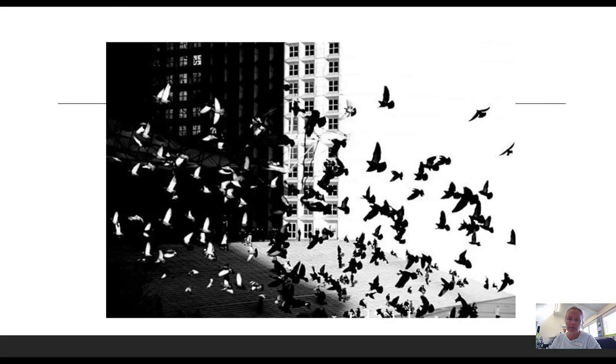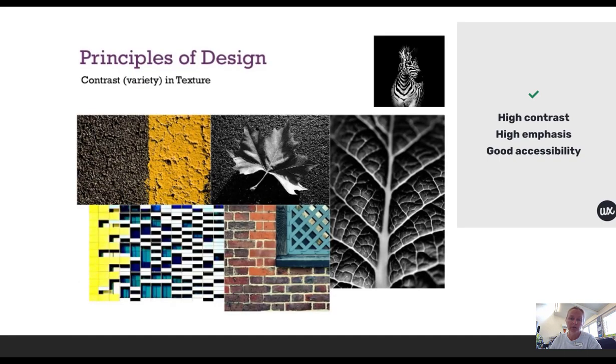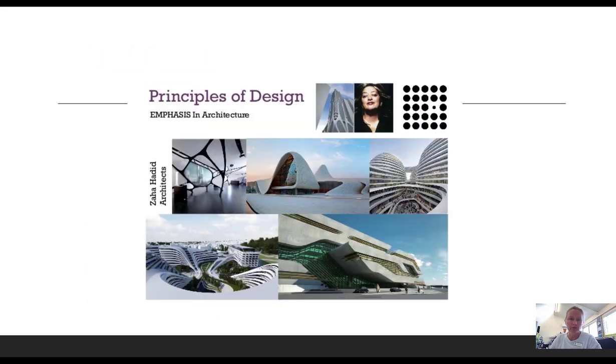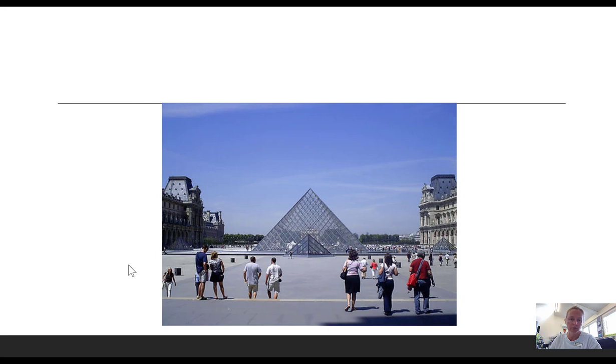Contrast is looking at the arrangement of opposite elements. It could be light or dark, rough or smooth, smooth or large. It's used to create visual interest. Dominance or emphasis is how we make parts stand out or create a focal point. It draws the eye of the viewer to the object.